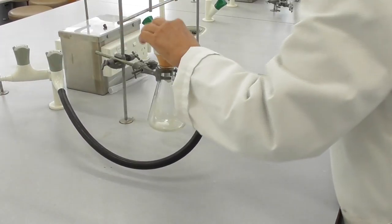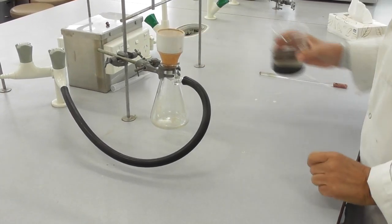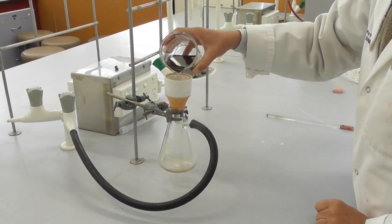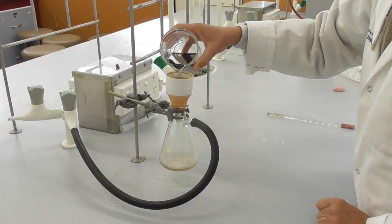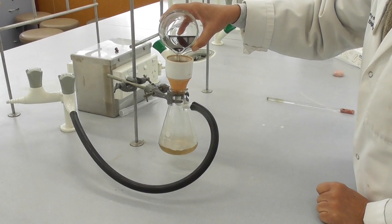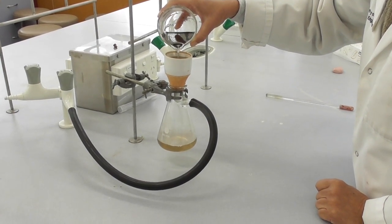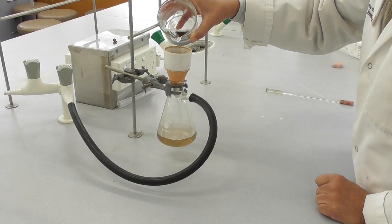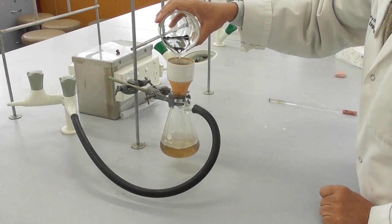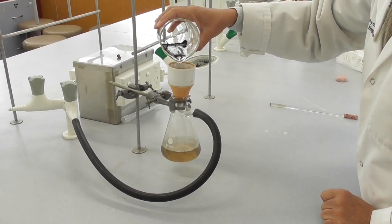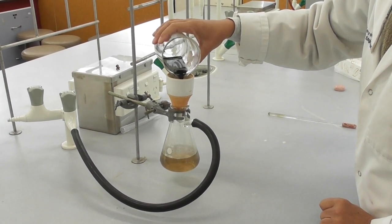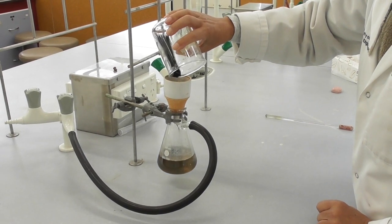I turn on the vacuum and then carefully pour my solution into the Büchner funnel. In this case I try to pour off most of the supernatant first and try to avoid getting the magnetite into the funnel, as the product is very fine and will clog the filter paper very quickly. Only when I have poured most of the solution through the funnel, I give it a little swirl to try to transfer my magnetite.